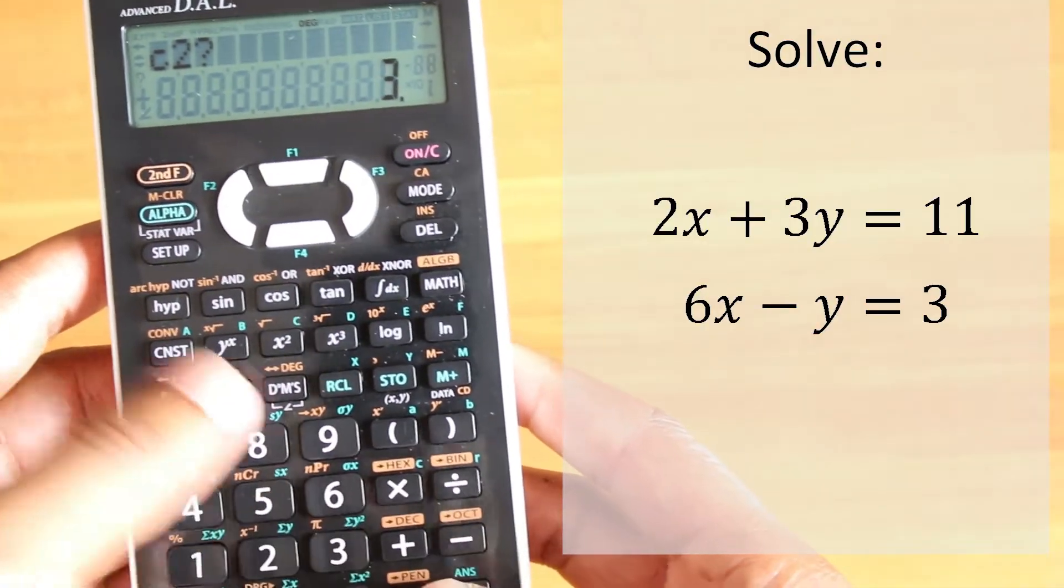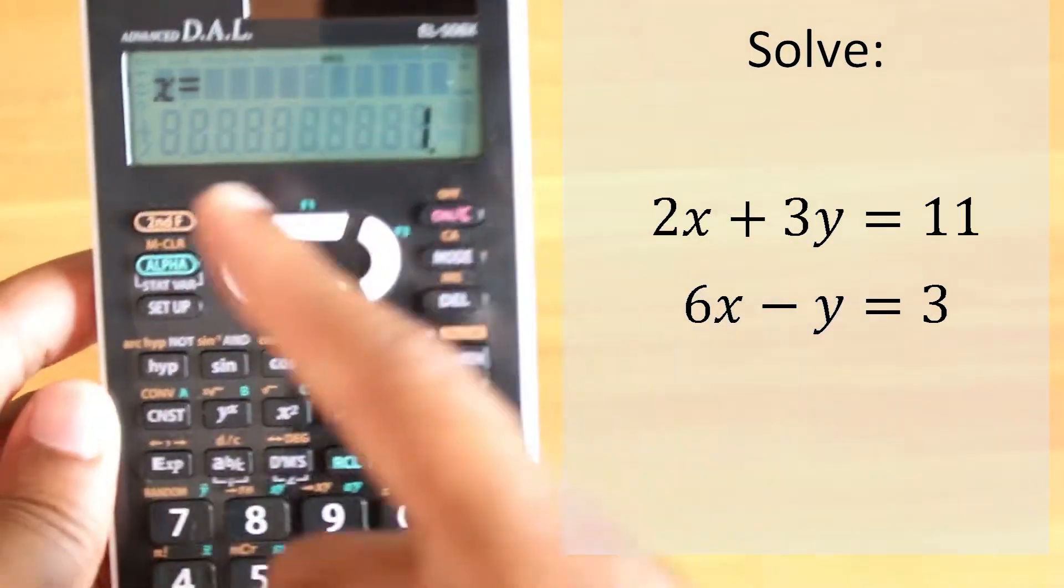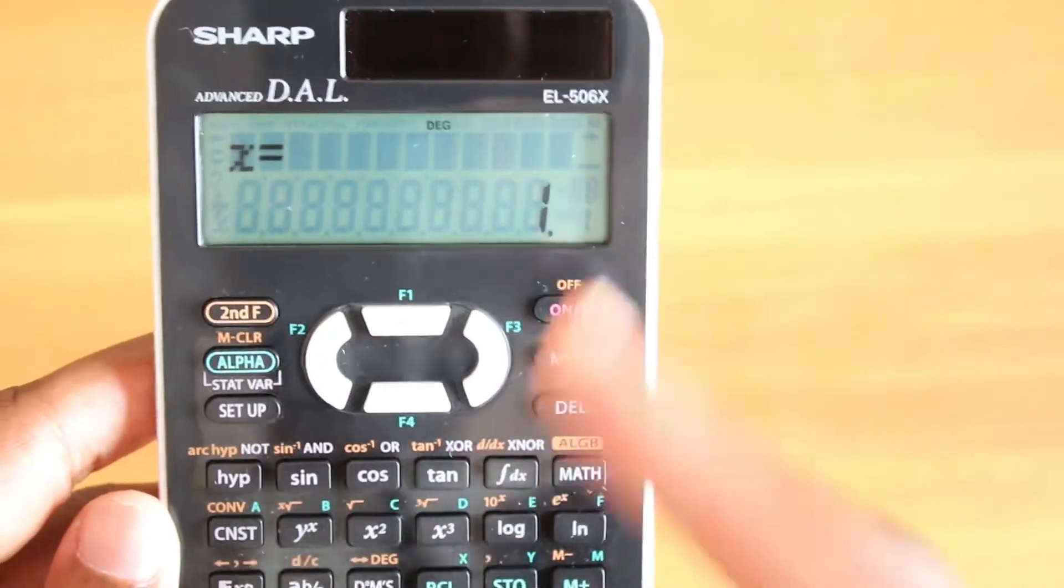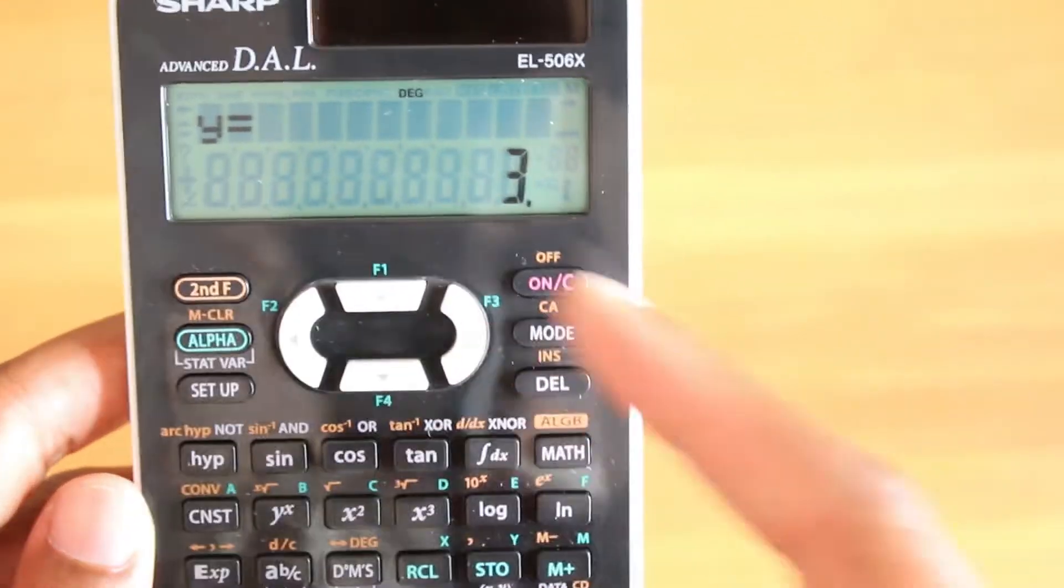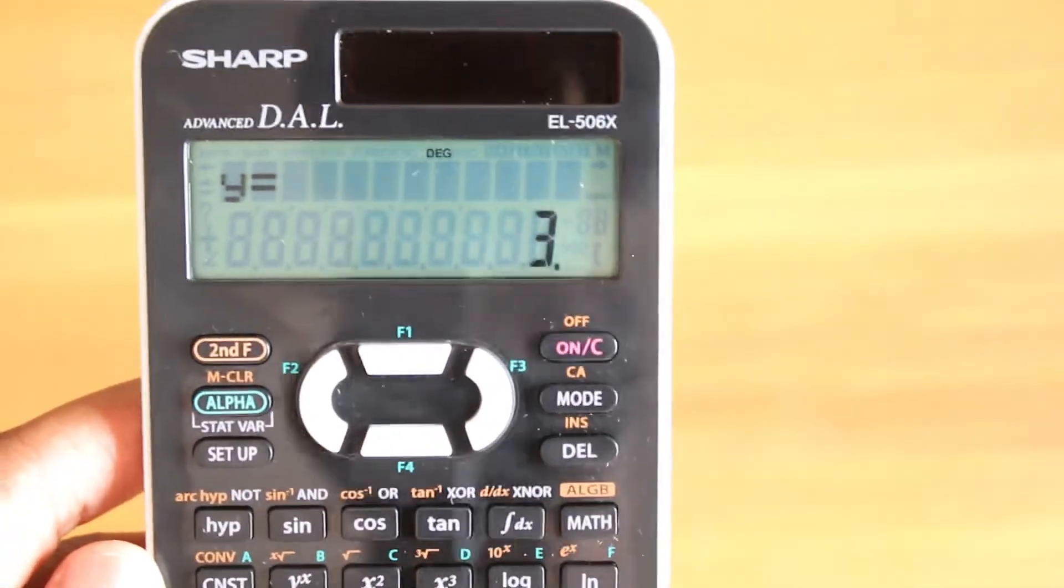Immediately the answer: x is 1, y is 3. Simple like that. So all this is extremely useful for CSEC.